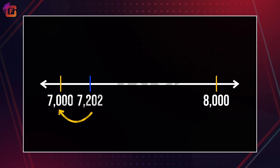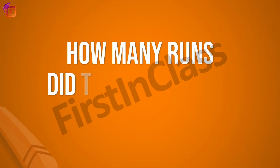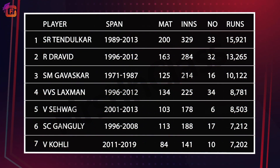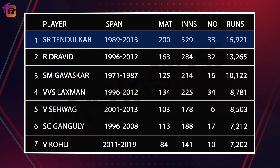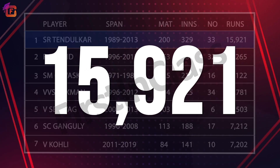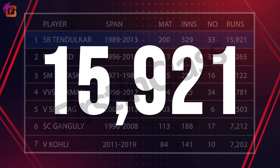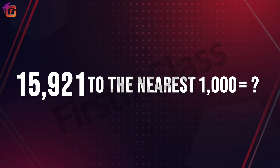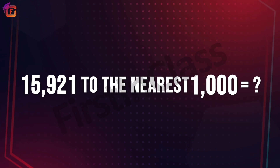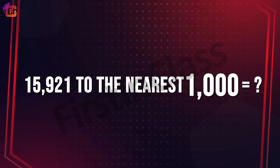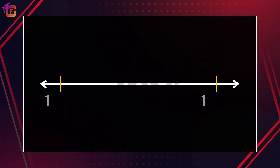Now let us find approximately how many runs the highest run scorer had. We can see from the table that Sachin Tendulkar has scored the maximum runs — fifteen thousand nine hundred twenty one. What is fifteen thousand nine hundred twenty one to the nearest thousand? Keep trying, learners.